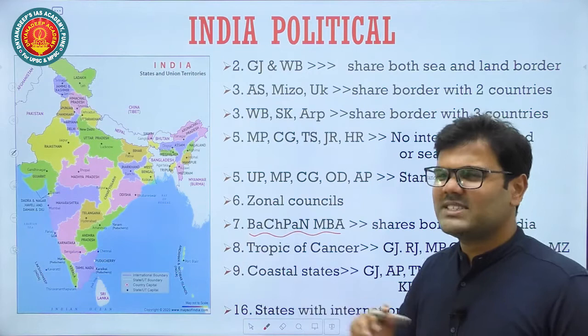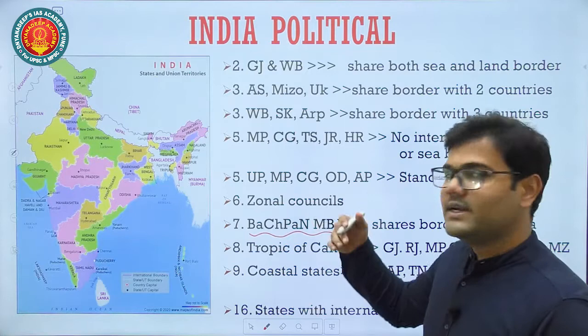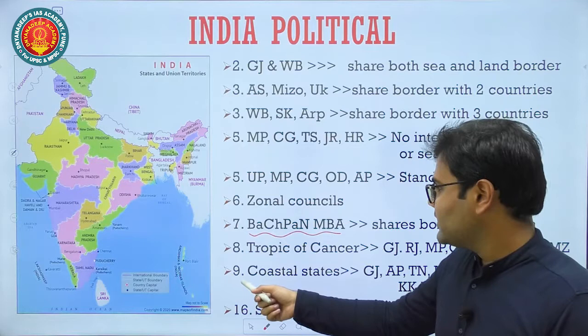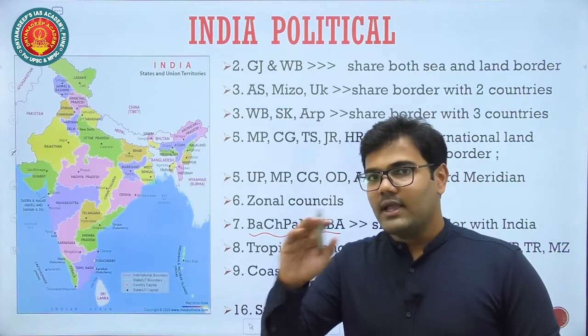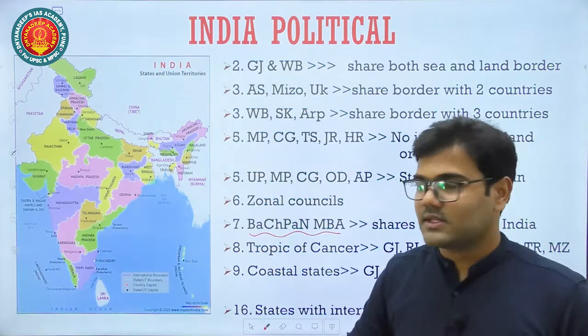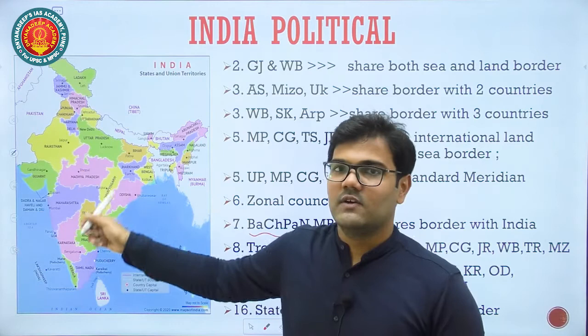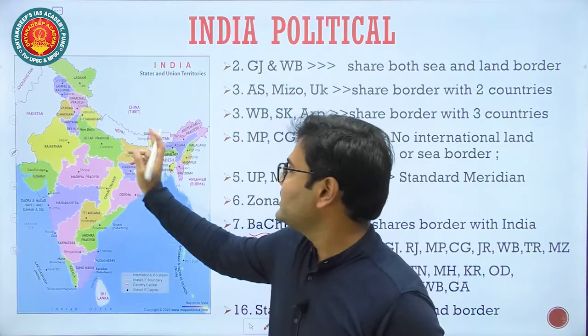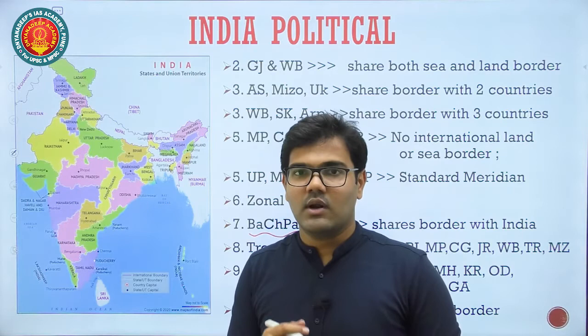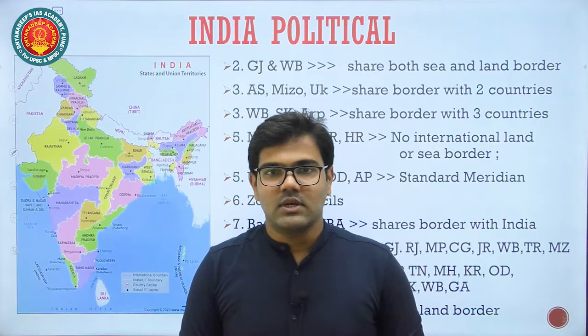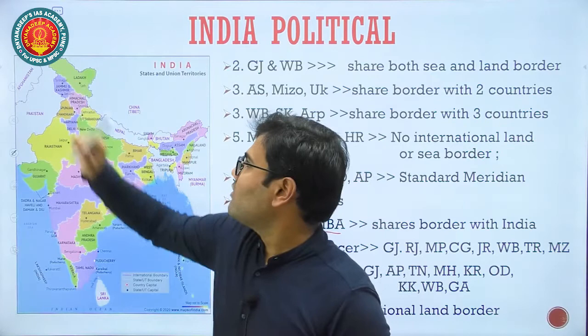Before going into detail about each physiographic region, these are just the basic facts regarding India. There are 9 coastal states — Gujarat shares the highest sea border, followed by Andhra Pradesh, Tamil Nadu, and Maharashtra. You should know the sequence of coastal states. You should also know the area-wise largest and smallest states, as some people confuse Goa and Sikkim. UPSC can also ask about union territories — smallest by area, by population, or about the newly formed Ladakh territory and its borders.